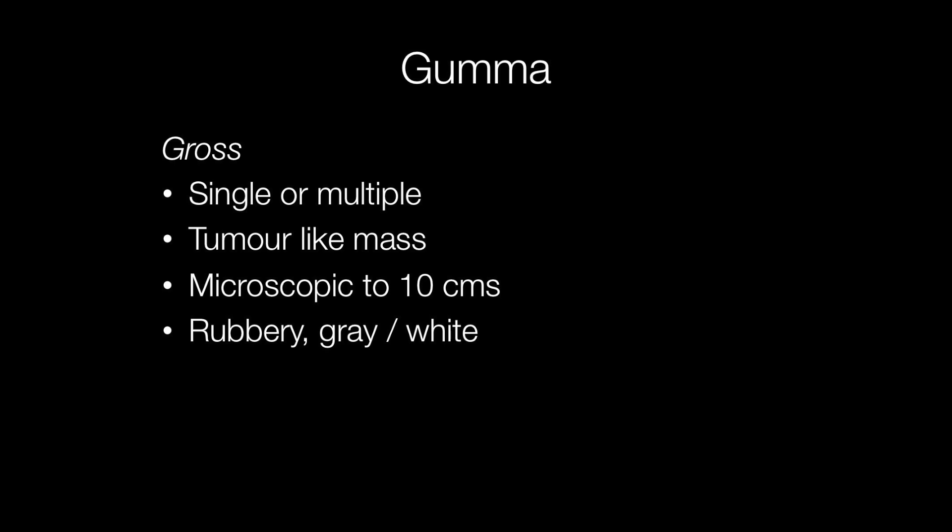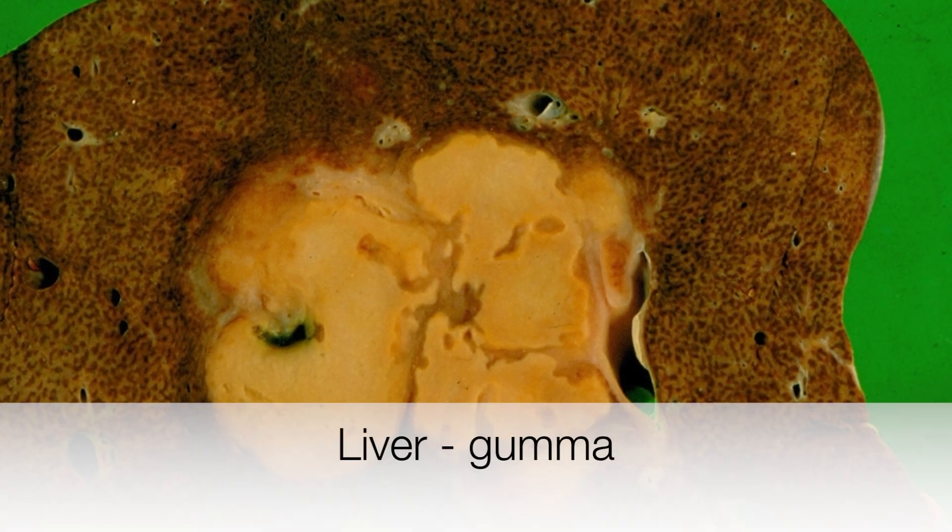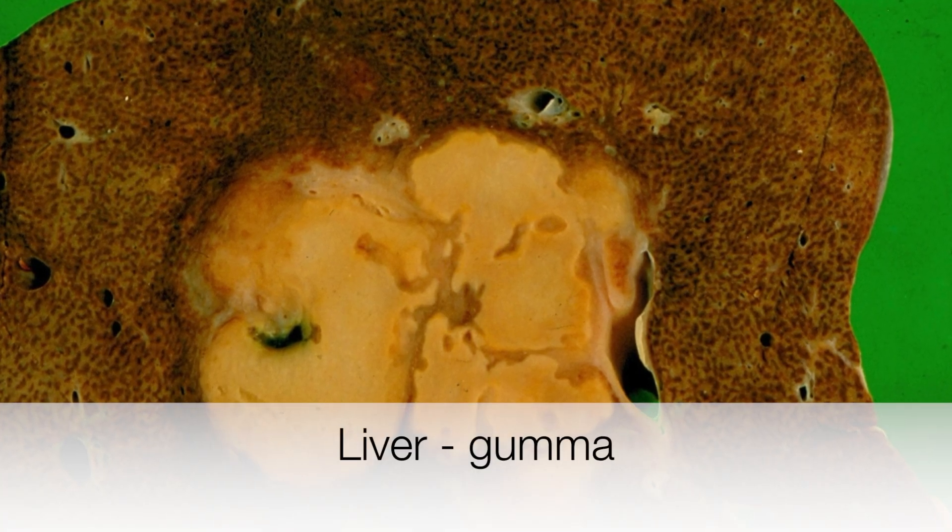Gummas may be single or multiple. They form a tumour-like mass that may be microscopic in size or anything between 2 and 10 centimetres across, and grossly have a rubbery grey-white cut surface. Here is a gumma that has arisen in the liver — that is the well-circumscribed whitish mass.